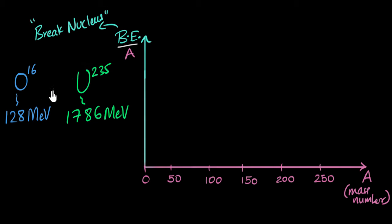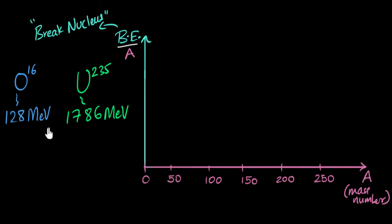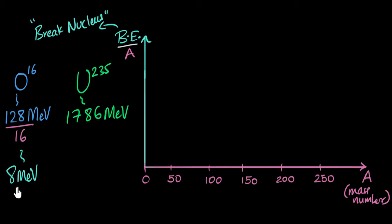We can't just use the total binding energy number to compare stabilities. To compare them fairly, we ask: how much energy does it take to separate one proton or one neutron? For oxygen, to separate all 16 takes 128 mega electron volts, so to separate just one, I divide by 16 — that happens to be about 8 mega electron volts. These are rough numbers. So to separate one proton or neutron from oxygen takes 8 mega electron volts of energy.